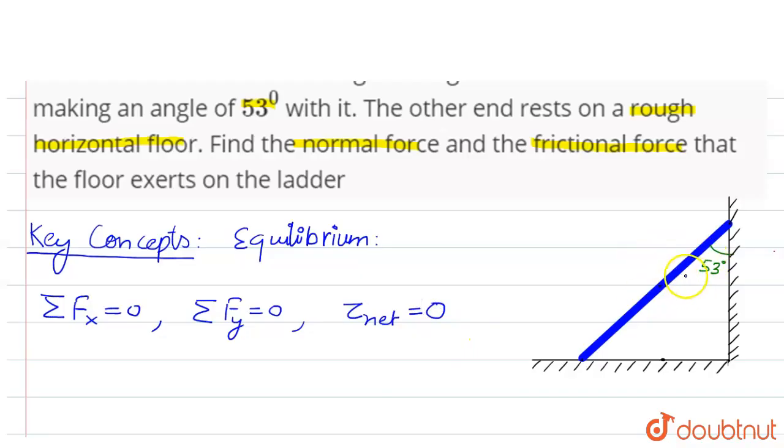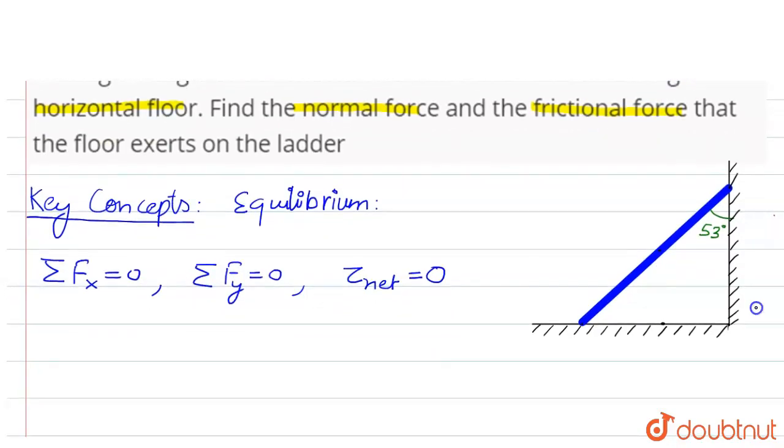As this ladder is in equilibrium, all these conditions would be true for it. Now let's draw all the forces acting on the ladder. As the ladder has mass, a weight W will act on it in the downward direction.